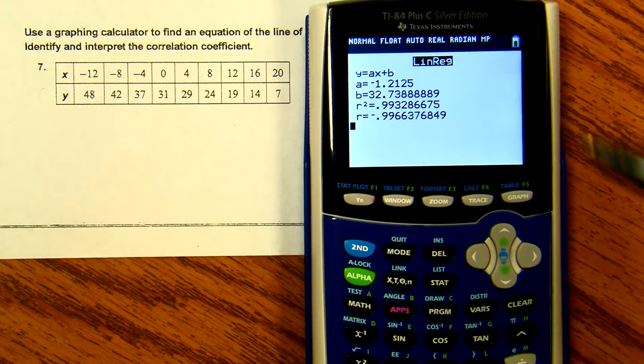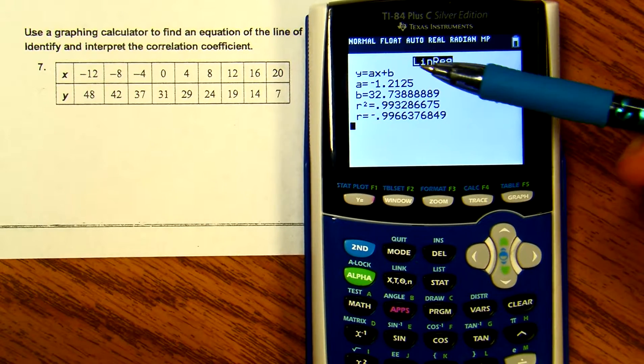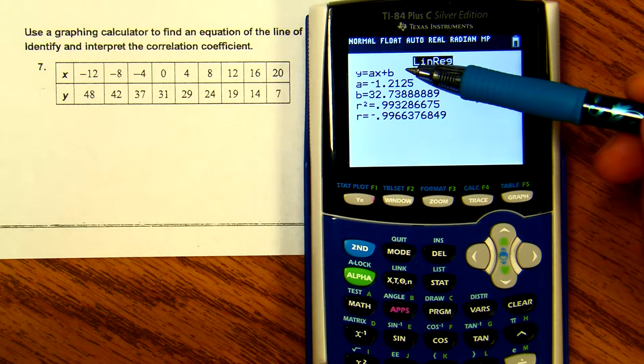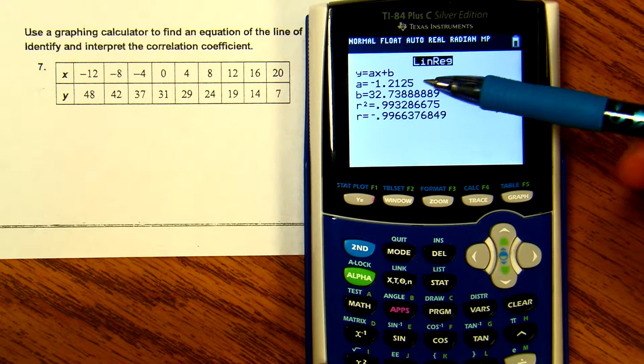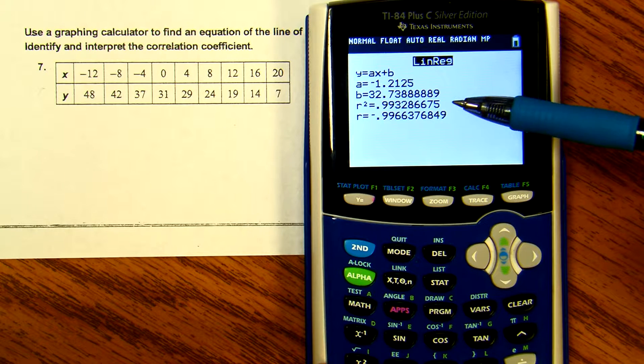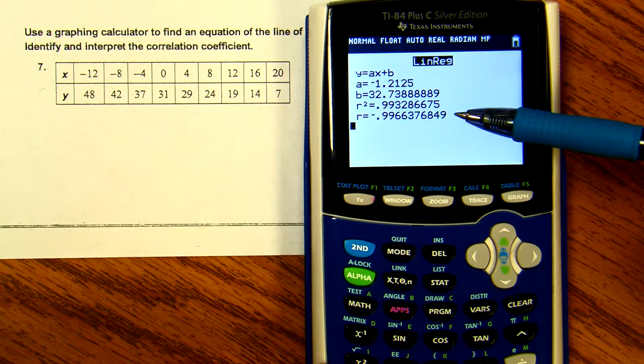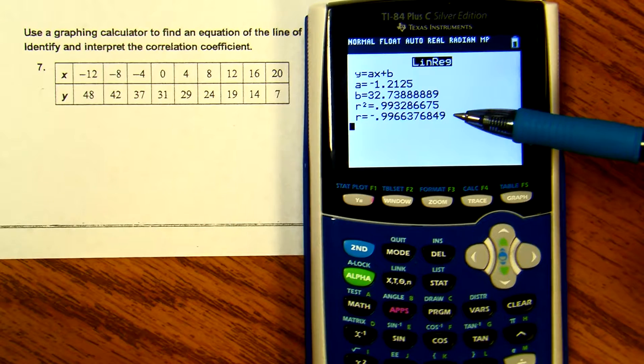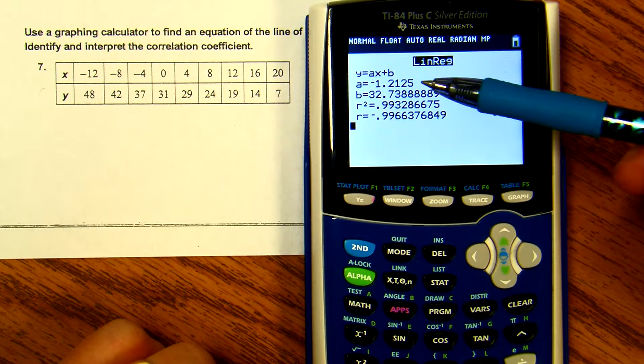You'll see your a value, b value, r² value, and r value. The r value is your correlation coefficient. Your a and b are the values you'll plug into the equation for the line.